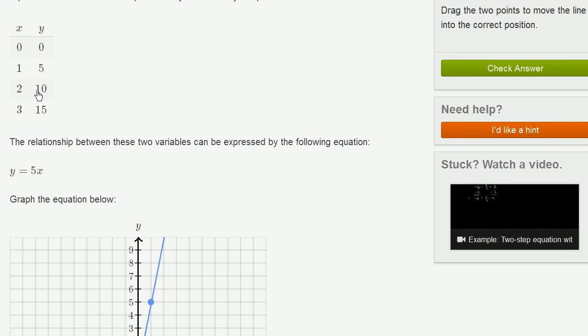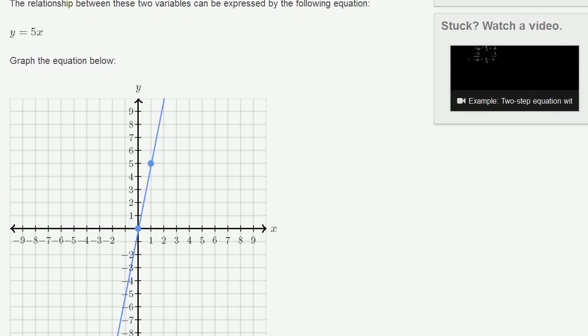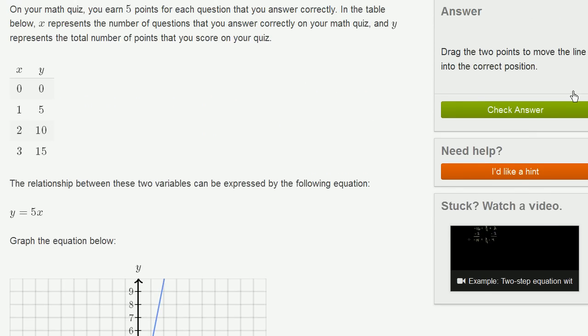We could also have plotted two questions, 10 points, any of these. But you only have to do two points to define a line. So it looks like we are actually done here.